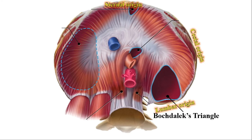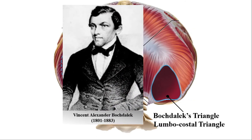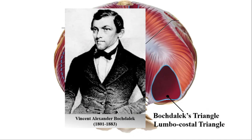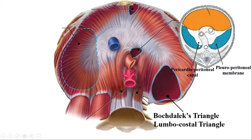Czech anatomist and pathologist Vincent Alexander Bochdalek first accurately described this triangle, hence it is known as Bochdalek's triangle. This triangle is formed due to incomplete closure of the pleuroperitoneal membrane, which ultimately leads to incomplete closure of the pericardioperitoneal canal.